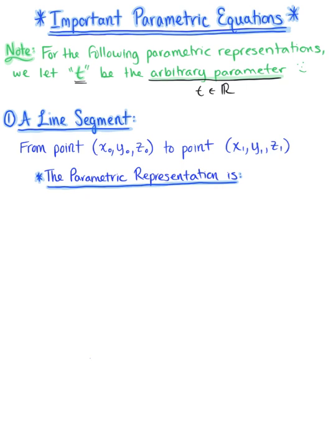The first parametric representation I want to review is that of a line segment. Thinking back to the beginning of this course, we looked at the parametric equations of a line segment, and we also looked at representing a line in space using a vector-valued function. That's the same thing that we're doing here, so let's start with the familiar vector-valued function for a line segment.